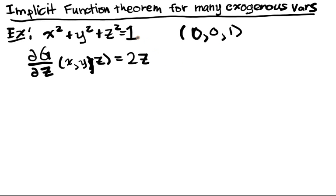Let's look at that point. And of course that point is there. dg/dz of x, y, z is equal to 2z. And therefore at 0, 0, 1, this is equal to 2.